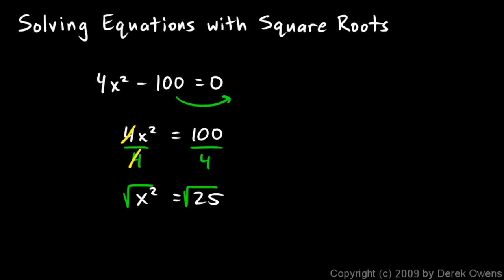Those 4s cancel out leaving us with x squared equals 25, and then we solve it by taking the square root of each side. On the left, the square root of x squared is just x, and on the right, the square root of 25 is plus or minus 5. Again, don't forget the little plus or minus.